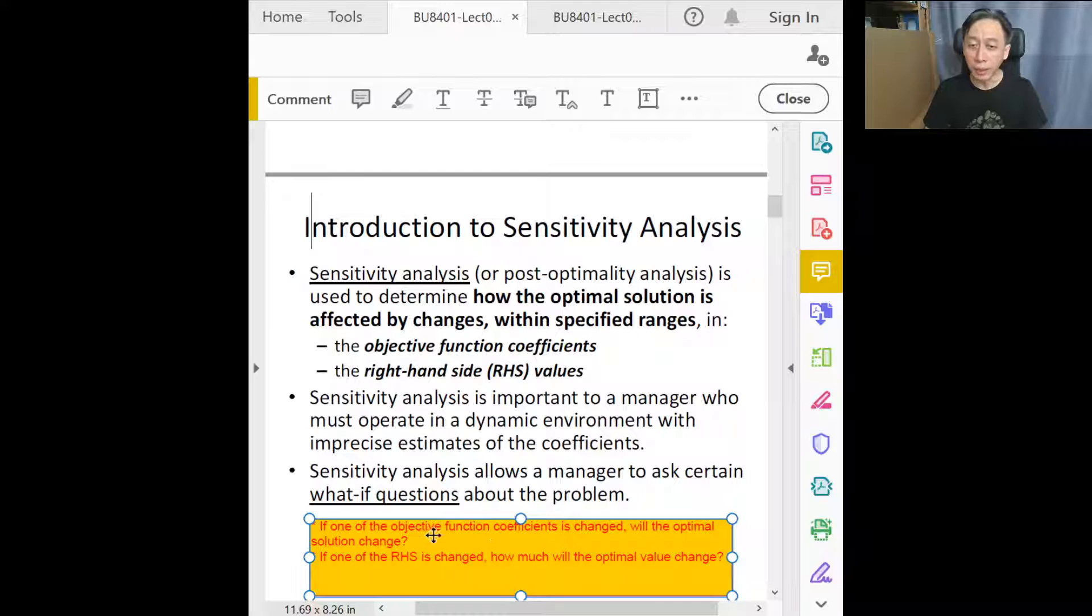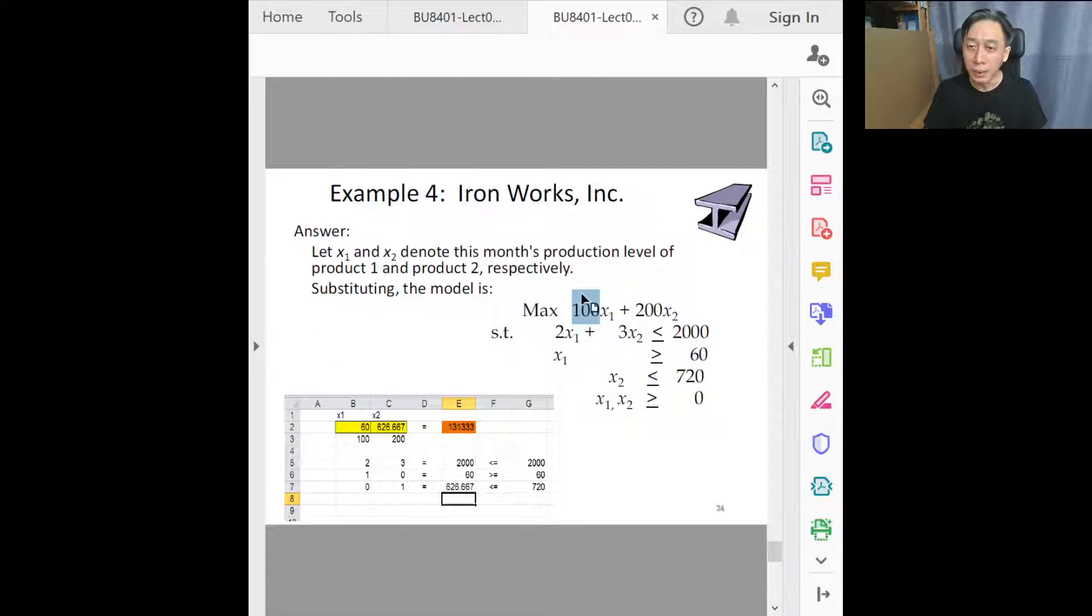Let's go to the first one: if one of the objective function coefficients is changed. What does that mean? If 100 is increased to 110, will the optimal solution change? Right now optimal solution is 60 comma 626.67. When we change from 100 to 110, question: will x1, x2 still have the same value as optimal solution?